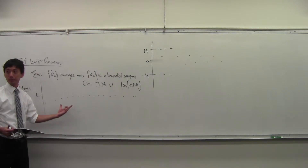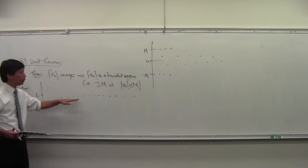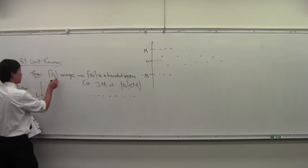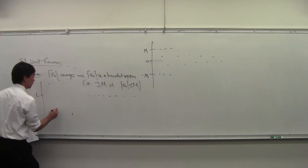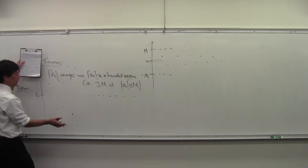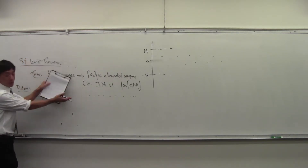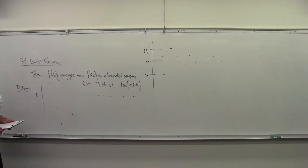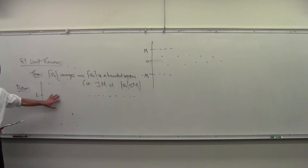So the finitely many terms do need to be bounded between M and negative M — and we will create an M that captures those guys as well. [Student: Could you have a scenario where it's bounded at the top but not at the bottom?] Not if there's only finitely many guys — they would be bounded above and below.